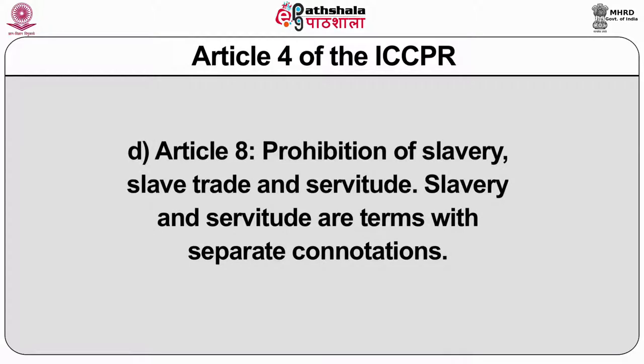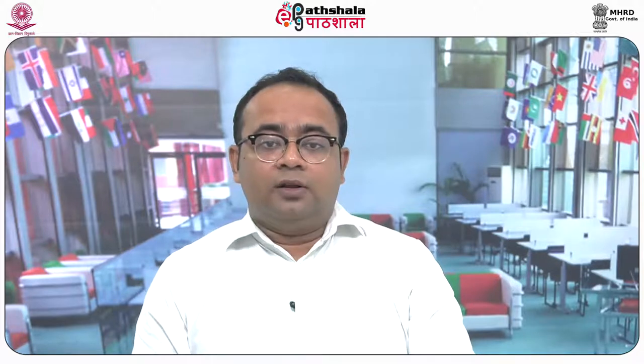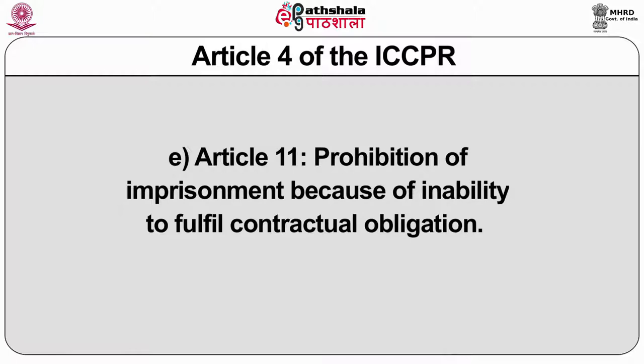Article 8: Prohibition of Slavery, Slave Trade and Servitude. Slavery and servitude are terms with separate connotations. While slavery implies the destruction of juridical personality and is considered the worst form of bondage intended to destroy the dignity of an individual, servitude is a more generic idea covering all possible forms of domination of an individual.